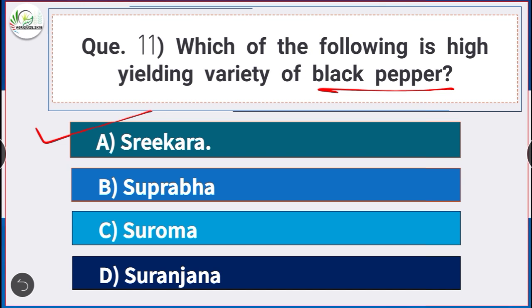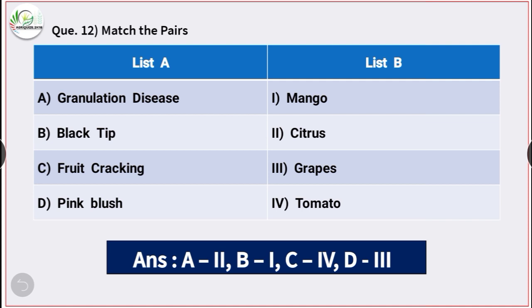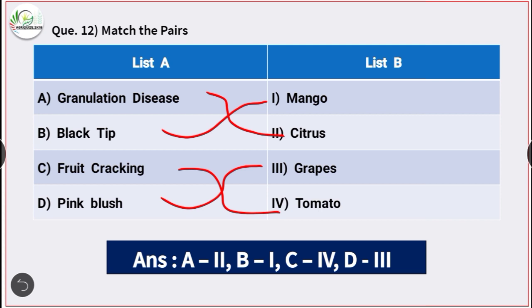Question number 12: Match the pairs. Granulation disease is associated with citrus. Black tip is associated with mango. Fruit cracking is associated with tomato. Pink blush is associated with grapes.